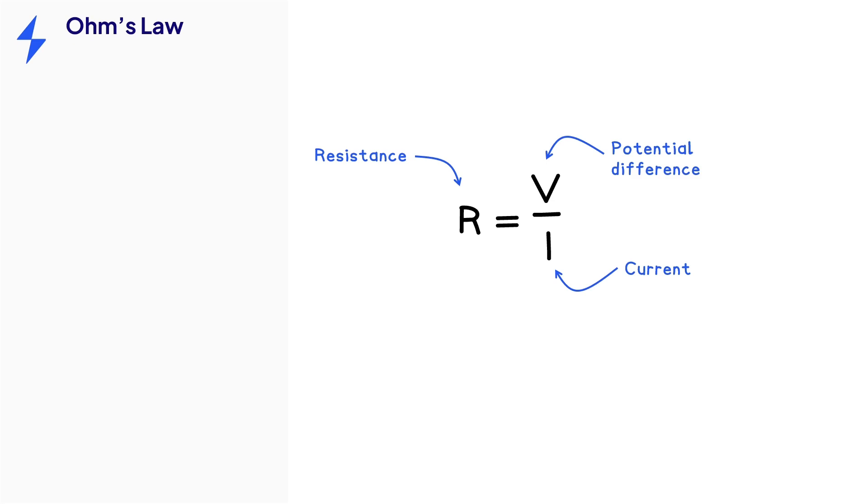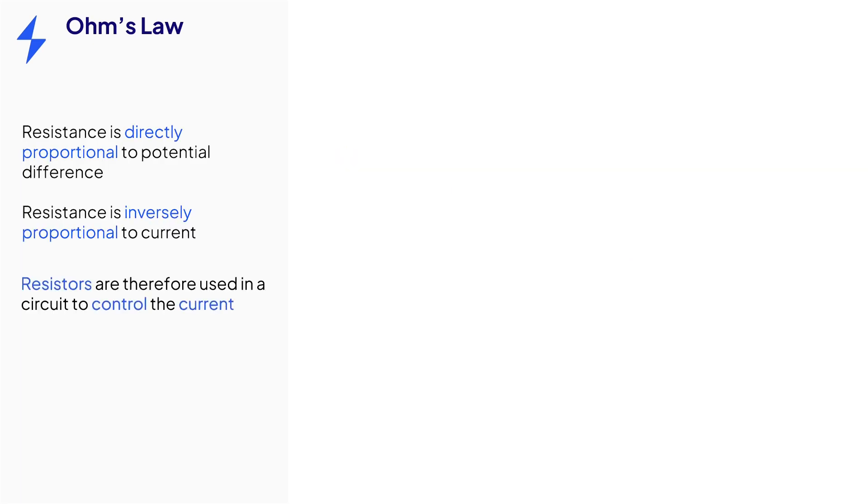It states that resistance is directly proportional to potential difference and indirectly proportional to current. Therefore, resistors can be used in a circuit to control the current in a given branch.